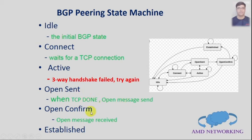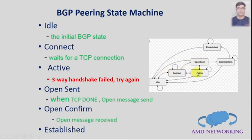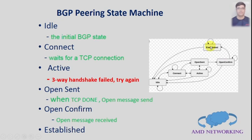In Open Sent, the Open message is sent to the neighbor peer, and then the state transitions to Open Confirm. In Open Confirm, the router waits for the Open message from the peer, and once it receives and agrees upon that message, the connection between the peers is established. To summarize the state machine: it starts Idle, goes to Connect, and when the three-way handshake completes it moves to Open Sent; otherwise it goes to Active to retry. From Open Sent it moves to Open Confirm, waits for the peer's Open message, agrees upon it, and the neighbor peering is established.